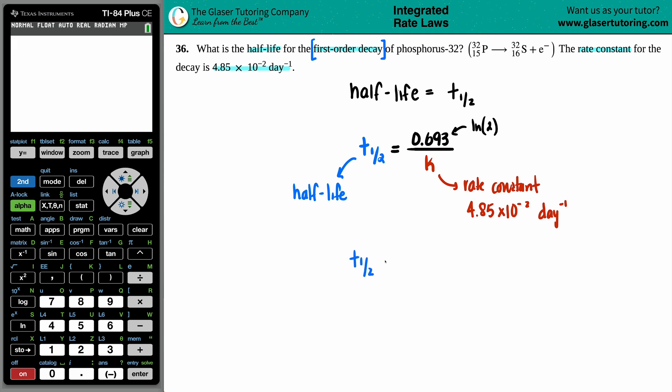Let's just solve. T-half equals the 0.693 divided by 4.85 times 10 to the negative second. Let's plug it in and see what's going on. How long is it going to take for that phosphorus to decay? 0.693 divided by 4.85 second comma times 10 to the negative 2. No parentheses needed. Press enter.